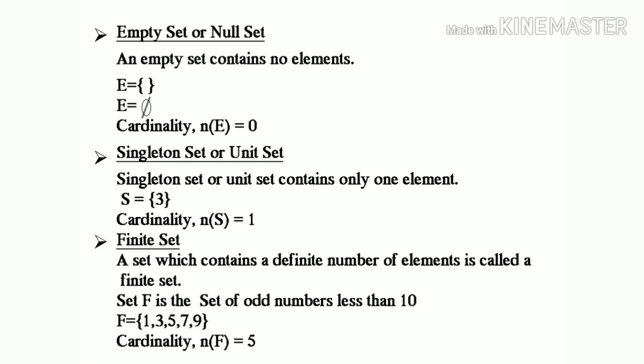Next one is finite set. A set which contains a definite number of elements is called a finite set. Set F is the set of odd numbers less than 10. F equal to {1, 3, 5, 7, 9}. Therefore, cardinality n of F equal to 5.